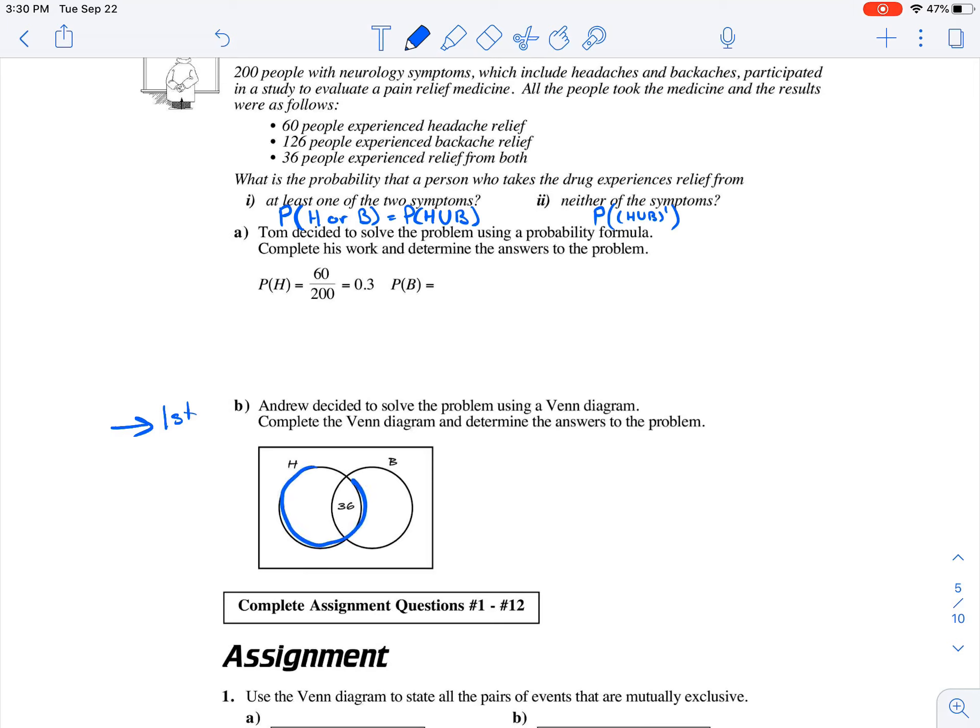It said that 60 people experienced headache relief, so in total everything inside of this set should equal 60. That means we need to subtract out 36 to find out that 24 experienced headache relief only. We'll repeat that process on the other side. So 126 minus 36 equals 90.